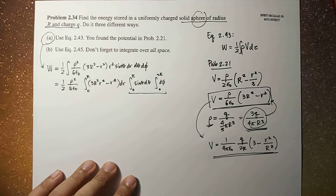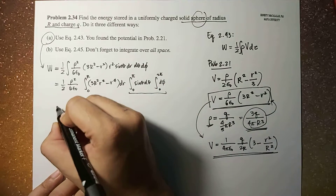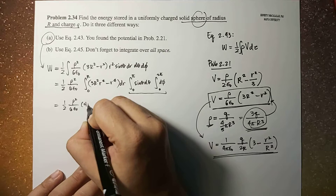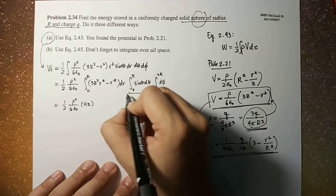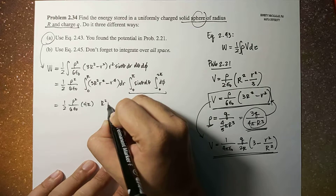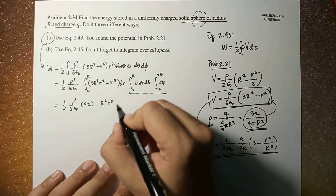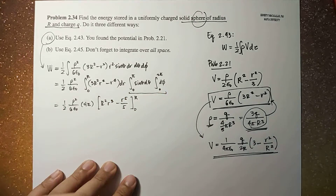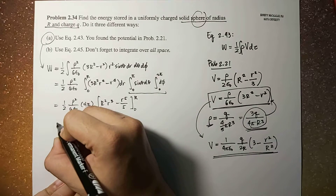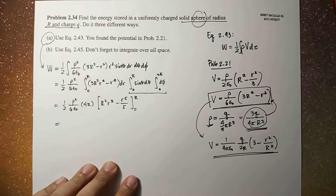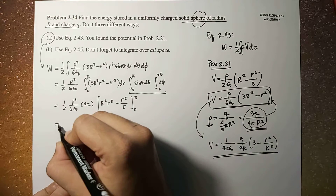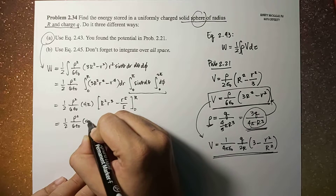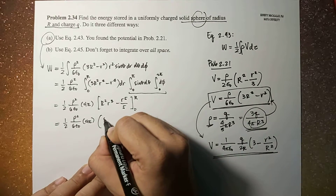The angular integrals evaluate to 4π. This simplifies to one half times rho squared over 6 epsilon-naught times 4π, times the radial integral of (3R squared r squared minus r to the fourth) dr, which evaluates to R cubed r squared... sorry, to R-cubed minus r to the fifth over 5, evaluated from 0 to R.